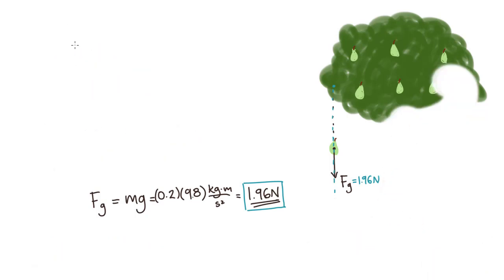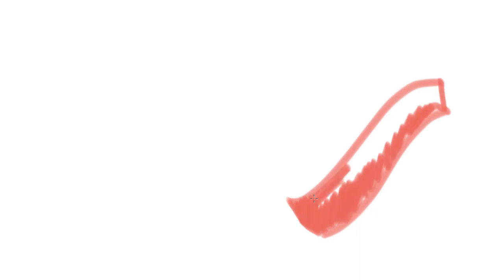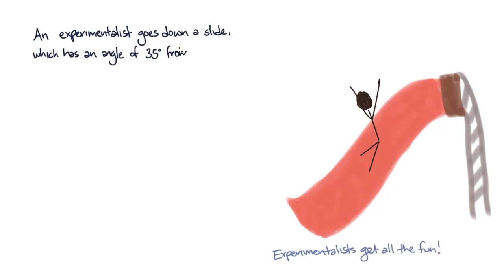For our next example, we'll investigate an object on an incline. Say for example, an experimentalist going down a slide. The slide is a pretty steep slide with an angle from the ground theta of 35 degrees. Our intrepid experimentalist weighs 60 kilograms. What is the net force on the experimentalist sliding down the slide?